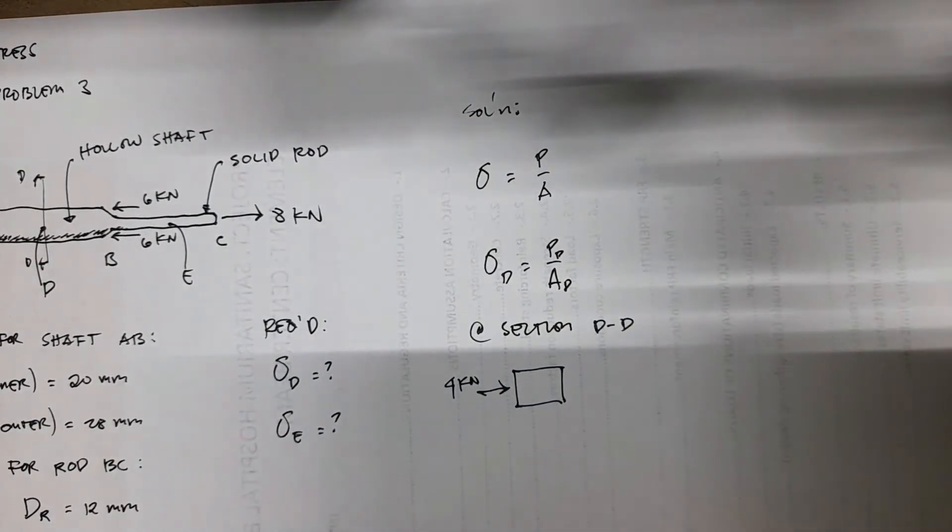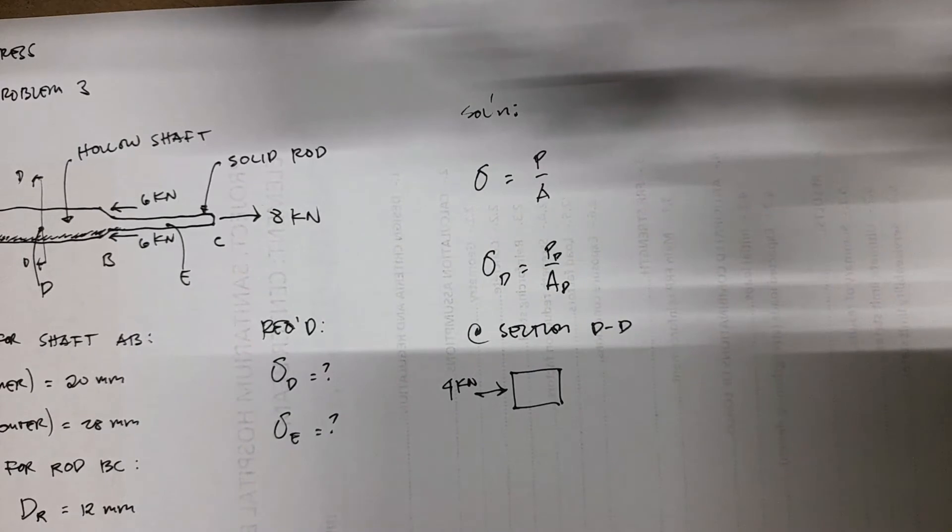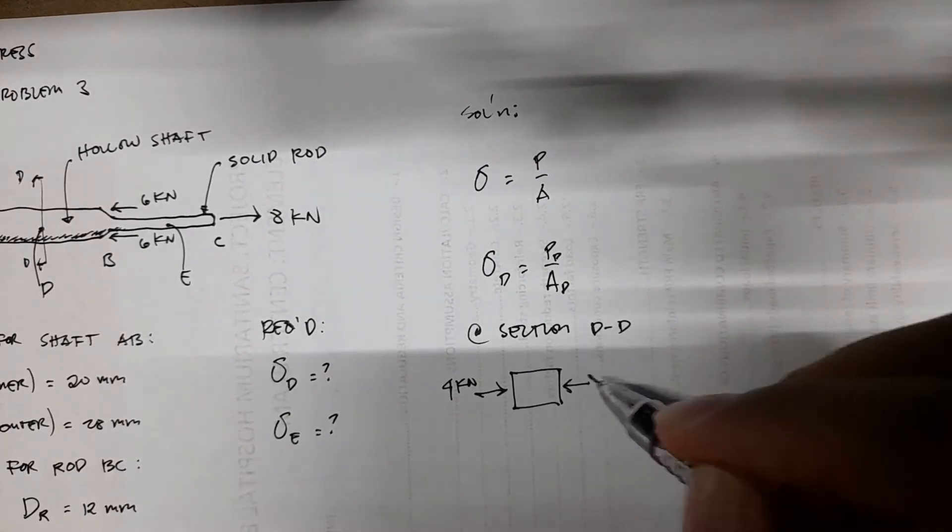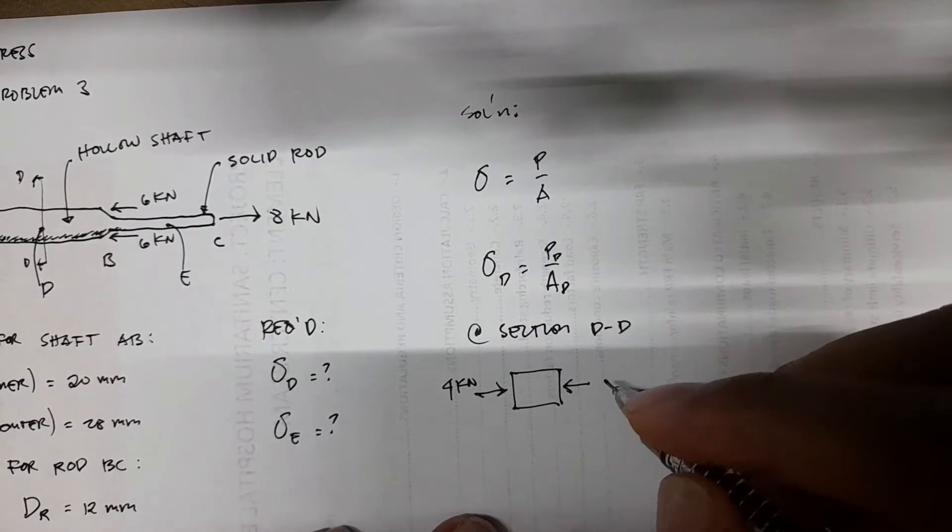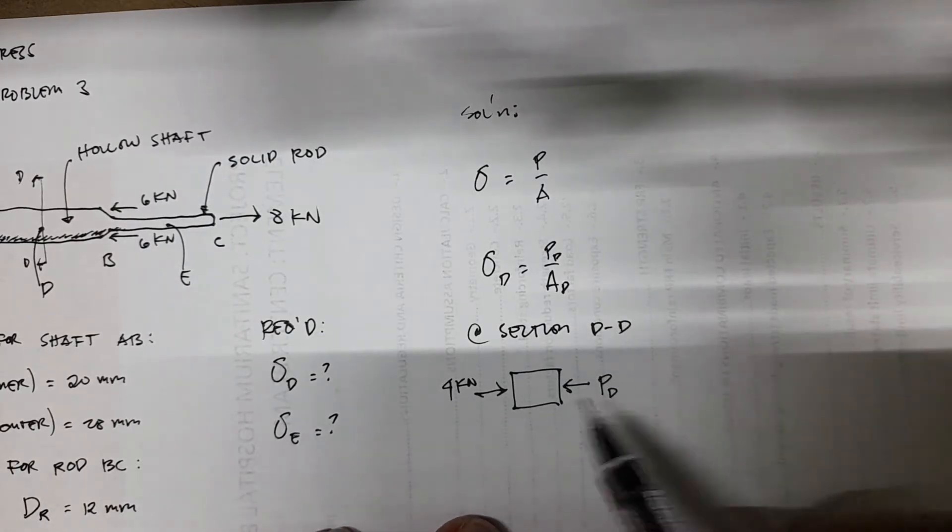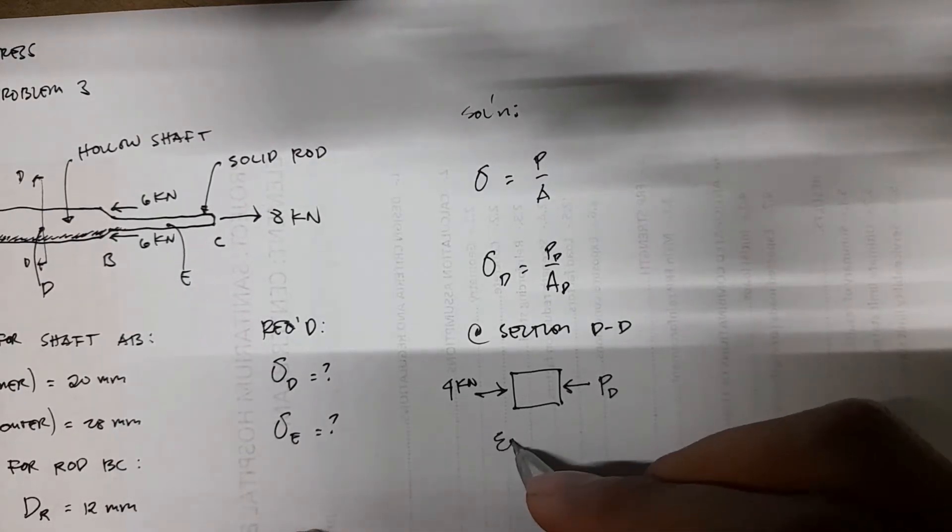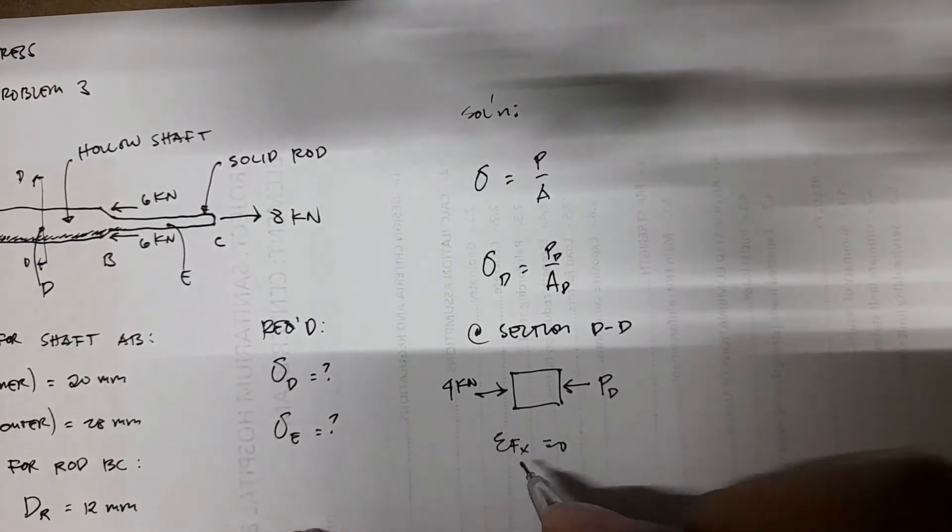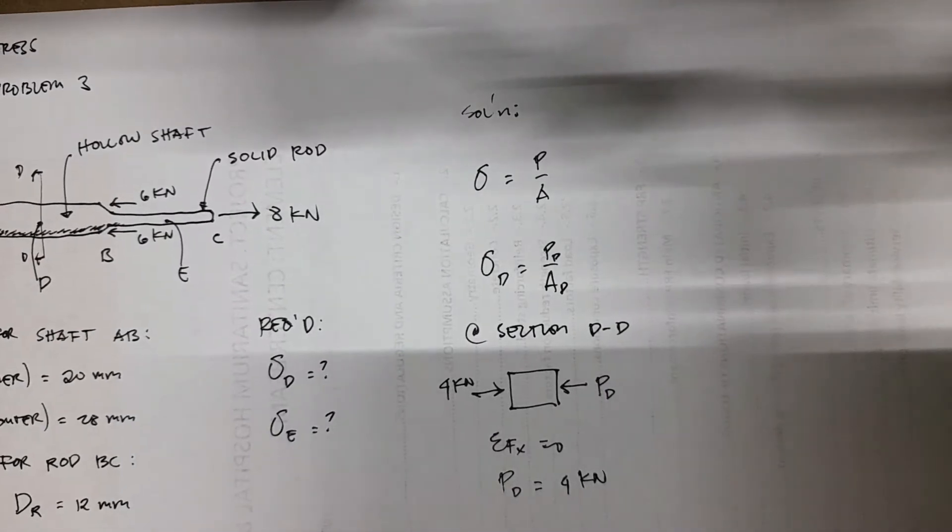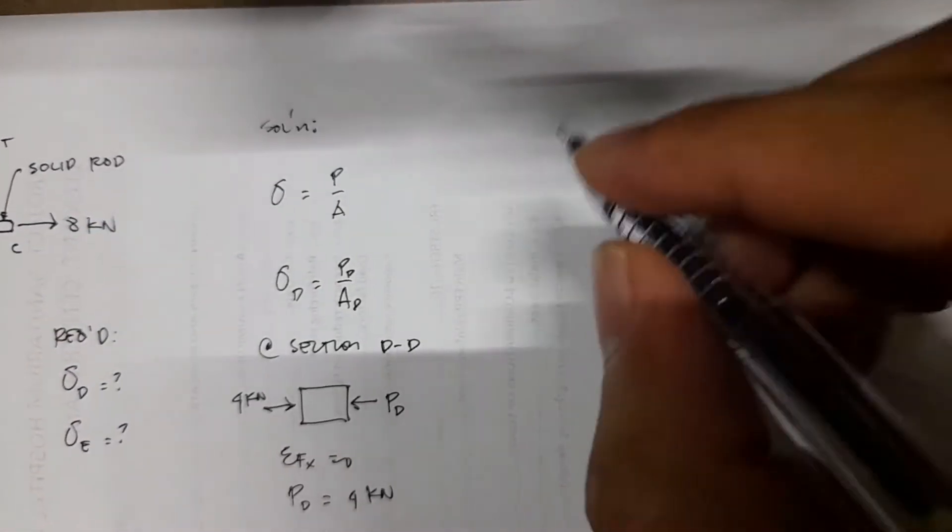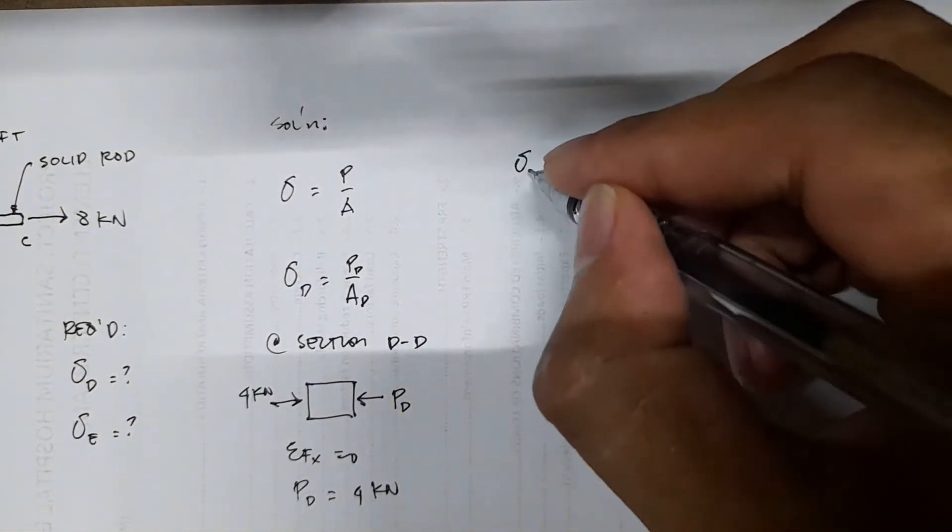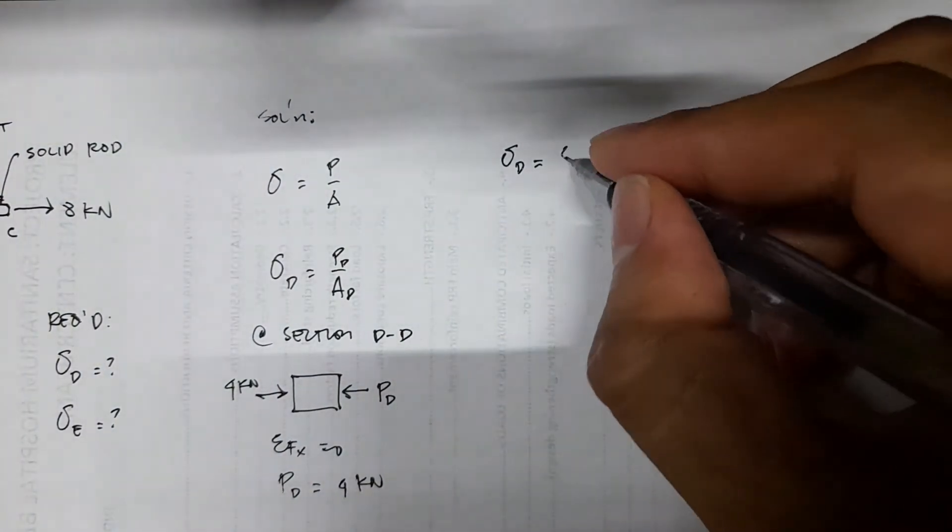If you remember this one from your statics of rigid bodies, the method of sections, you have the internal force, which is now your PD, which is your force at the section D. So summation of forces along X equals zero. So you just have PD equals 4 kN. Your stress D is just equal to 4,000 N, which is 4 kN.